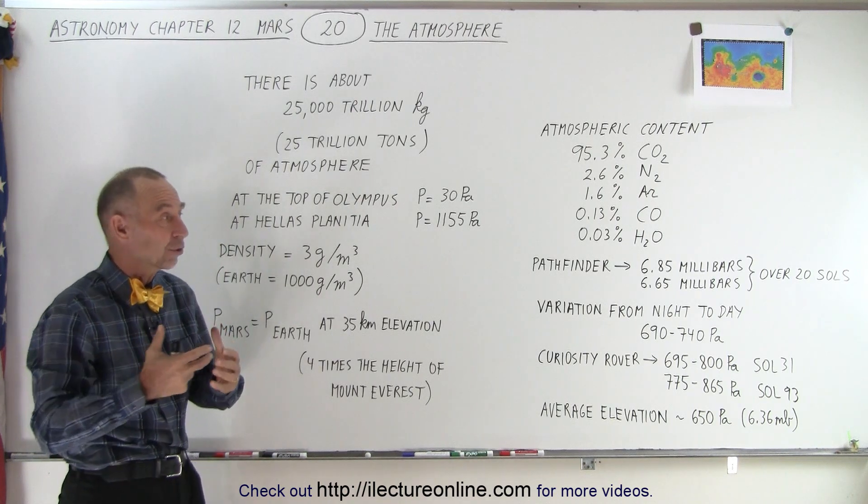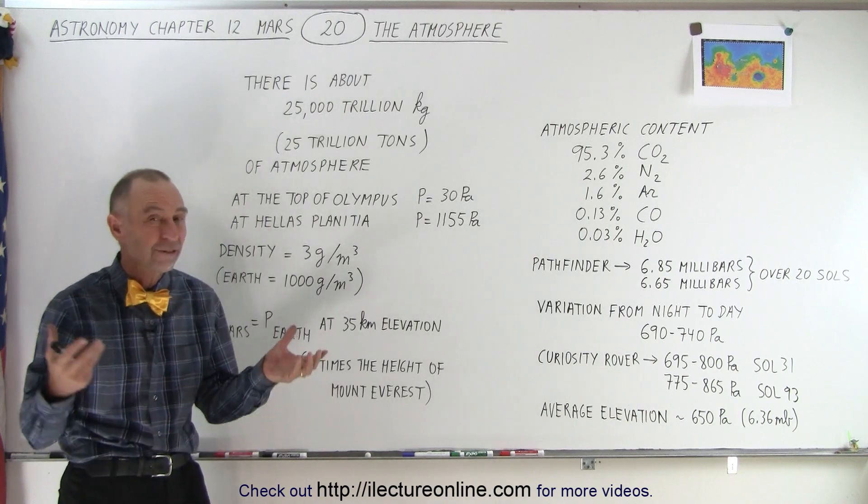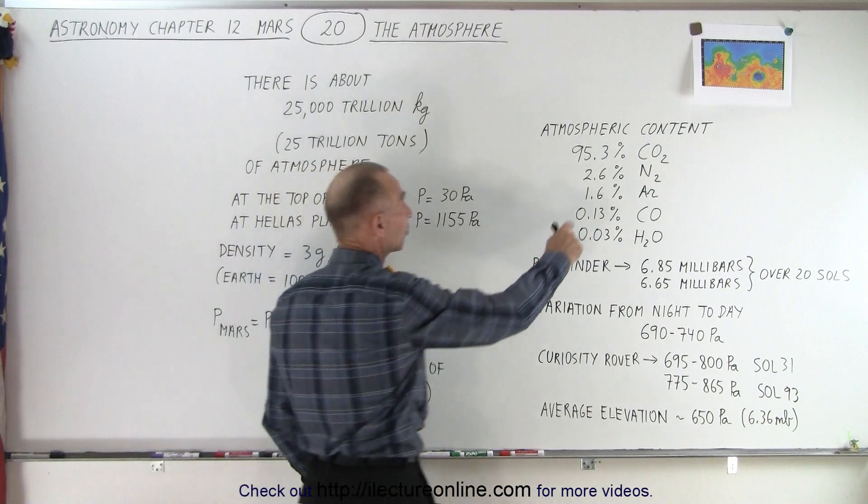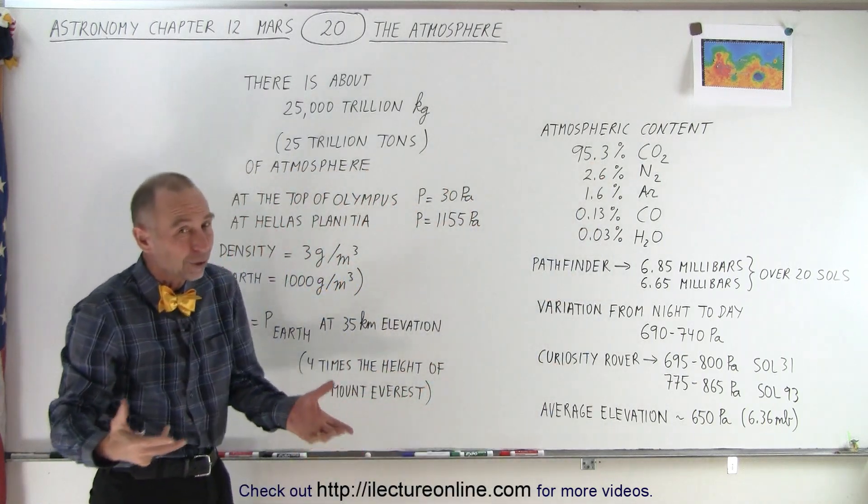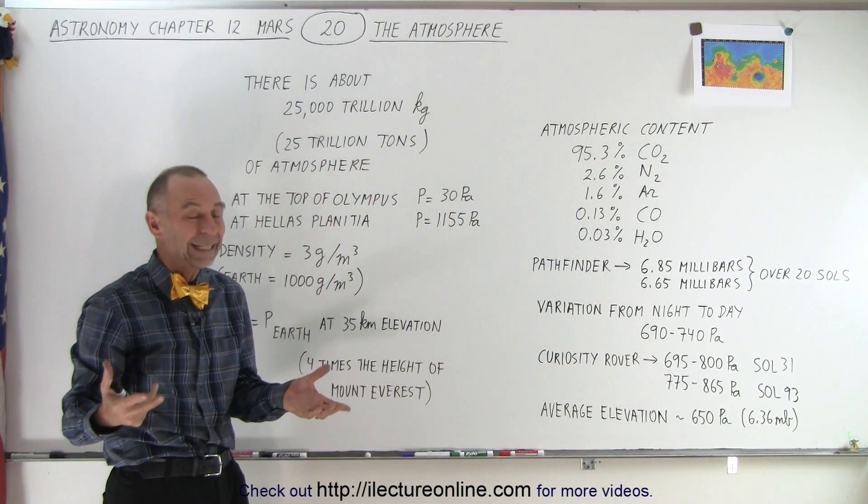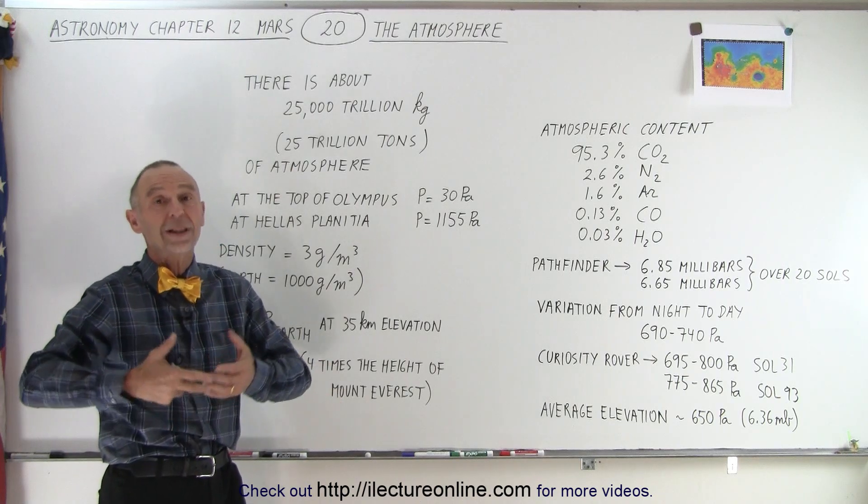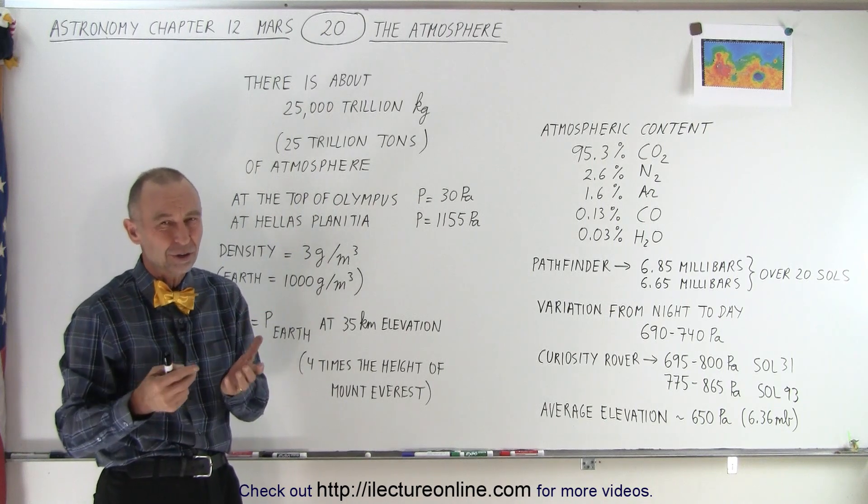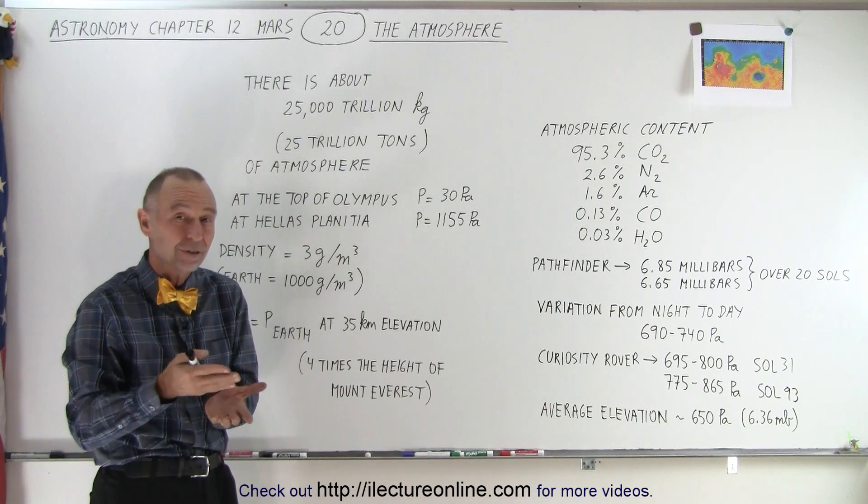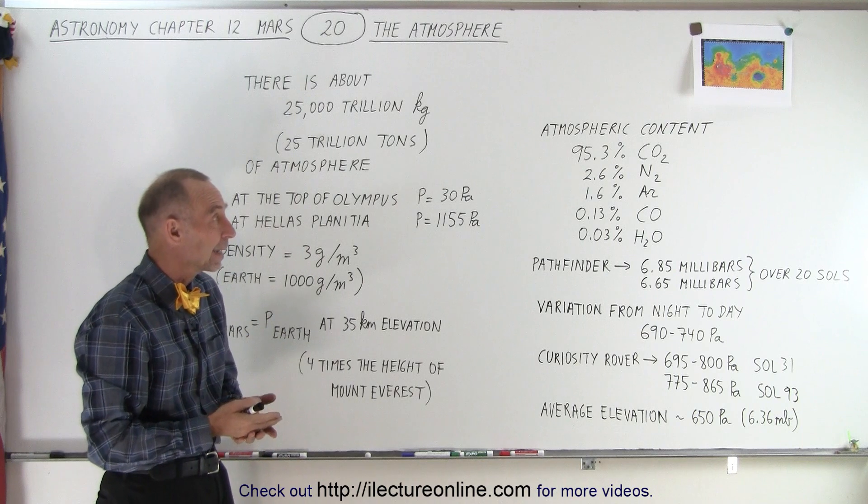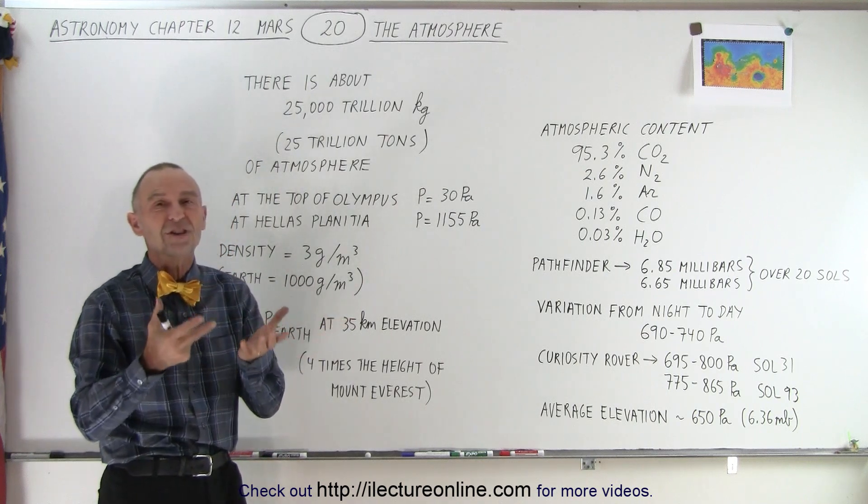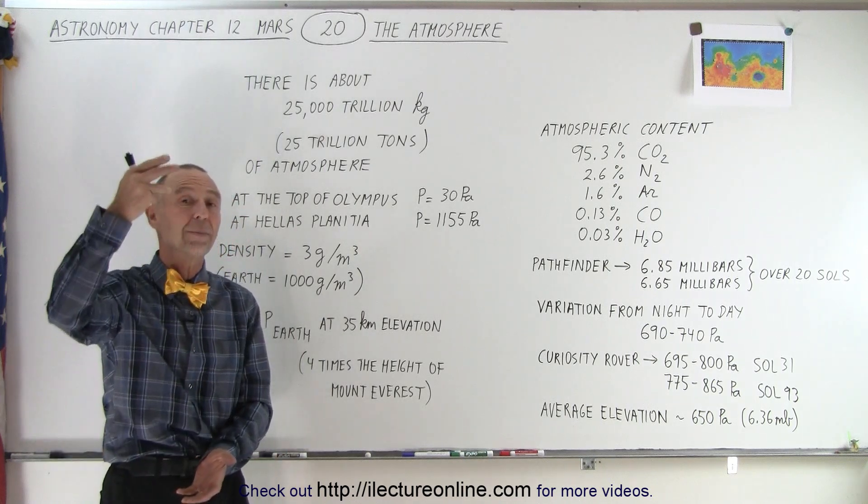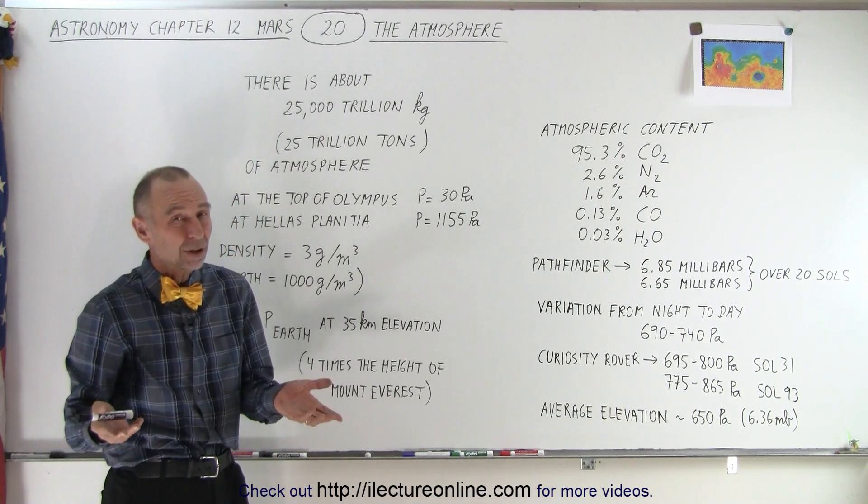Now another big contributing factor to the temperature on Mars is the fact that there's so little atmosphere. Even though much of it is carbon dioxide, we know carbon dioxide is a greenhouse gas, there's only so much of it. So in the daytime it gets relatively warm because of the sunshine, but at night the temperatures plummet and it can be as much as a hundred degrees Kelvin difference between daytime and nighttime simply because the atmosphere is just not capable of hanging on to the heat. So the temperatures plummet at night and rise quite a bit in daytime.